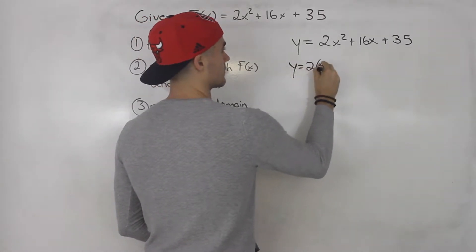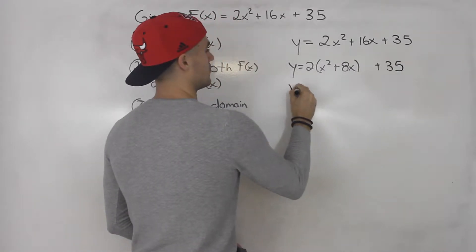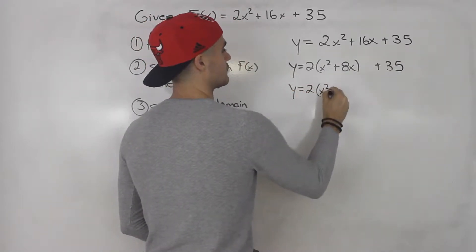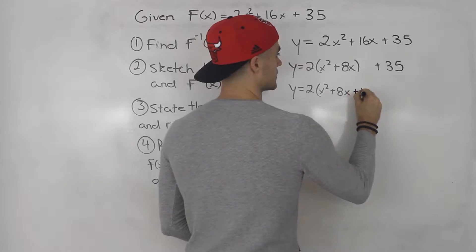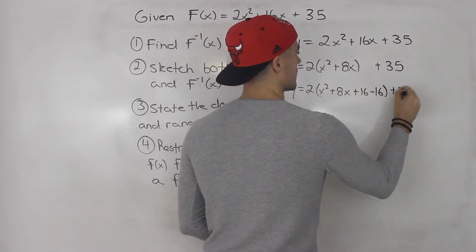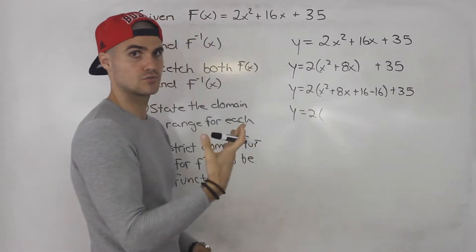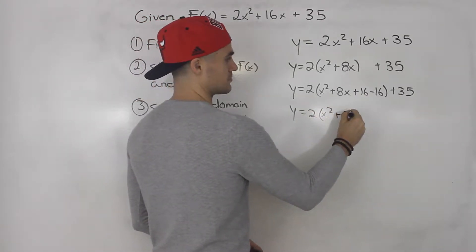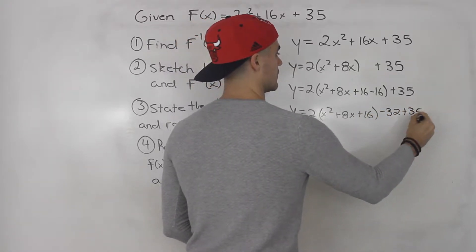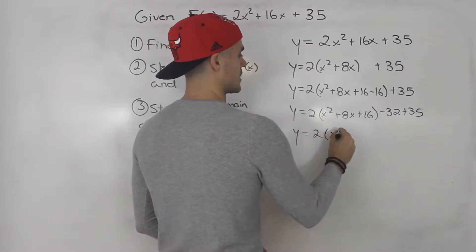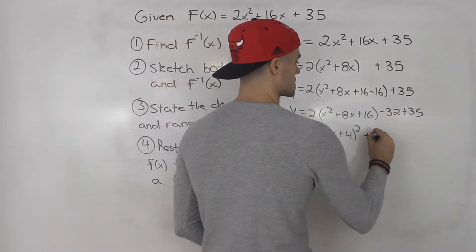We can take out a 2, giving us 2 times (x squared plus 8x) plus 35. Then we take half of 8, which is 4, and square it to get 16. So we add and subtract 16 inside: 2 times (x squared plus 8x plus 16 minus 16) plus 35. We take the negative 16 out and multiply it by the 2, giving us 2(x squared plus 8x plus 16) minus 32 plus 35. This is always a perfect square trinomial.